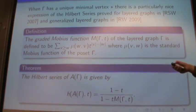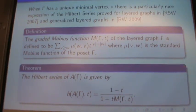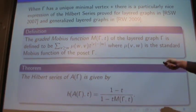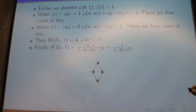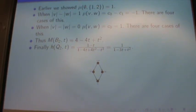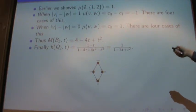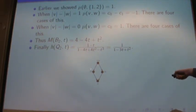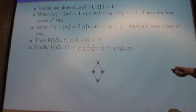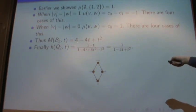For an example of the graded Möbius function, the coefficient of T^i is found by summing the Möbius function over all comparable pairs of elements that are distance i apart in their layers. For B2, we earlier computed the Möbius function from minimal to maximal as 1, giving coefficient 1 for T^2. For T^1, we look at all vertices distance 1 apart — there are four such pairs, each giving Möbius value −1, so the coefficient is −4. For T^0, comparable elements at the same layer give coefficient 4. So we get 4 − 4T + T^2, and plugging that into the theorem gives the same Hilbert series.